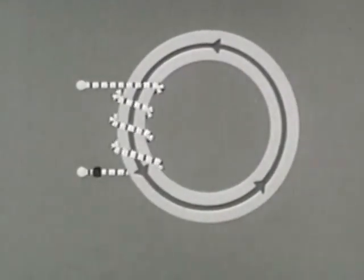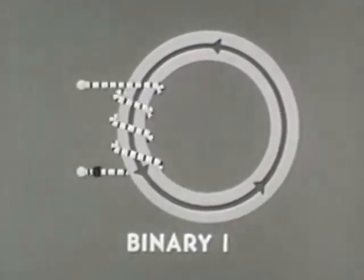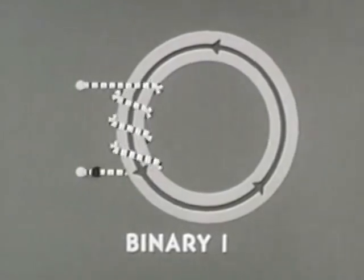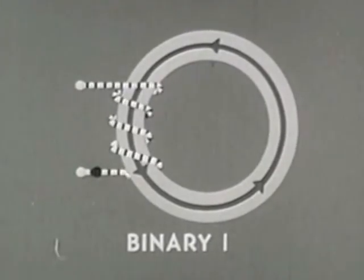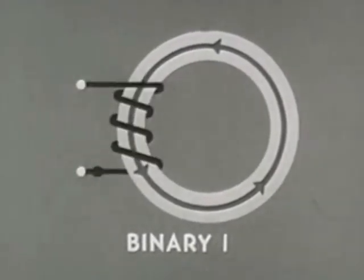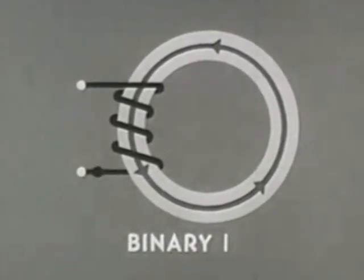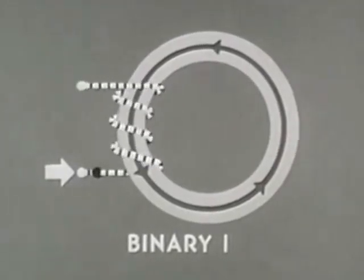When non-dot current sets the core to the binary one state, the residual property keeps it that way indefinitely. Suppose there is a second pulse of non-dot current — it will have no practical effect on the core because the core is already saturated with positive magnetism. But if we send current through the other way, into the dot side of the winding, then of course the core's state will change.